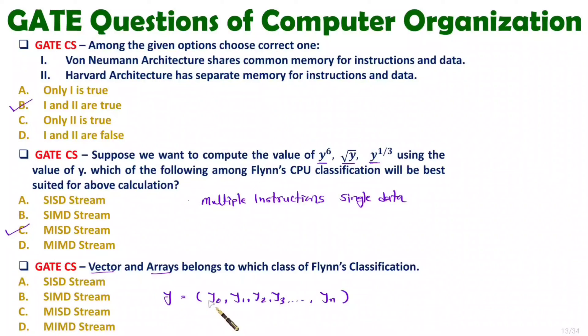So here when you talk about array or vector obviously there will be multiple data. And we will be performing same instruction on those data. Like you can have y into 2 or y plus 2. So what you will be doing? You will be multiplying, adding, dividing those things with multiple data.